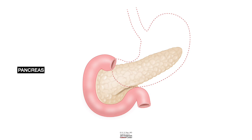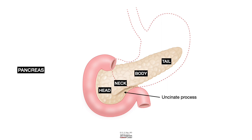So what are the different parts of the pancreas? The part enclosed in the C loop is known as the head of the pancreas. Then there is the neck, body, and tail. In addition, there is a small segment known as the uncinate process, which is closely related to the D3 and D4 sections of the duodenum.